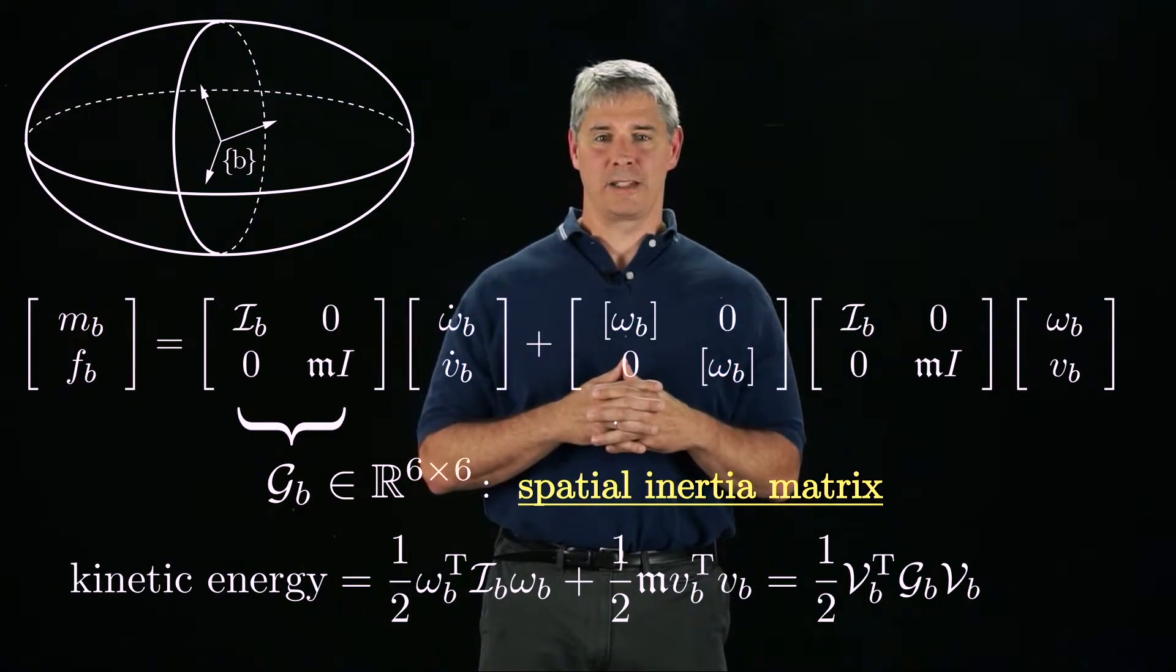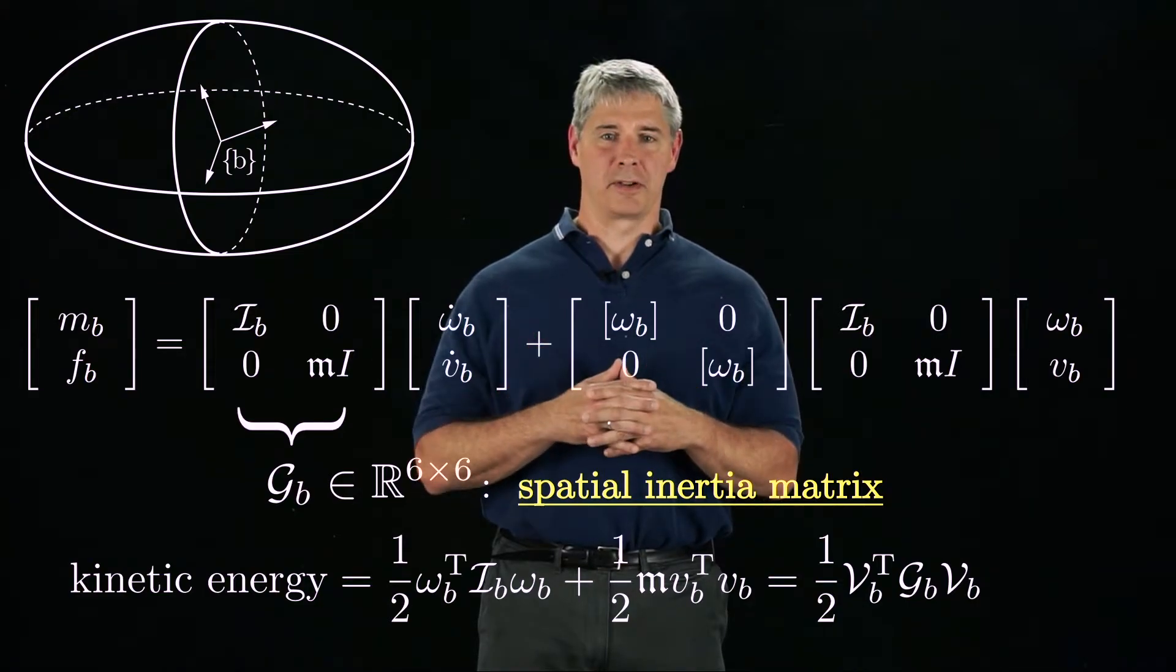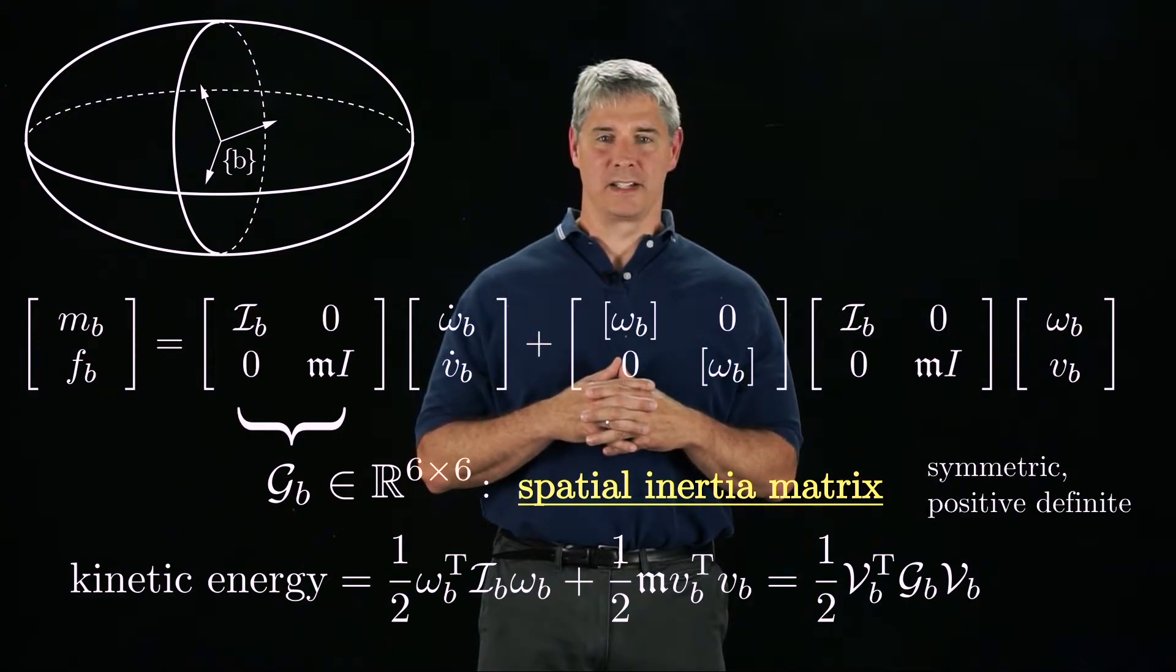Also, just like the mass matrix of a robot in the rotational inertia matrix IB, the spatial inertia matrix GB is symmetric and positive definite.